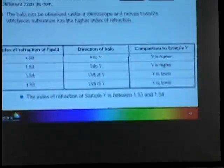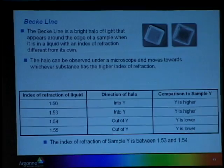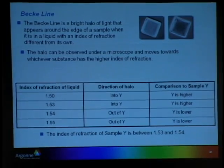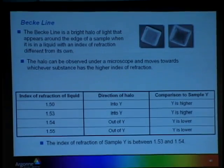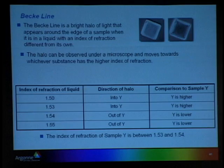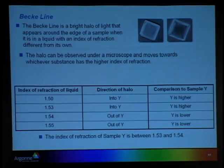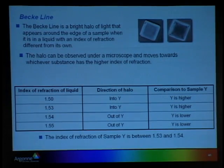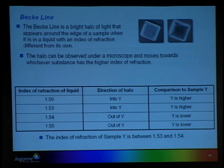Another instrument we used was called the Becke line. It's a bright, hollow light that appears around the edge of a sample when it is in liquid with an index of refraction different from its own.